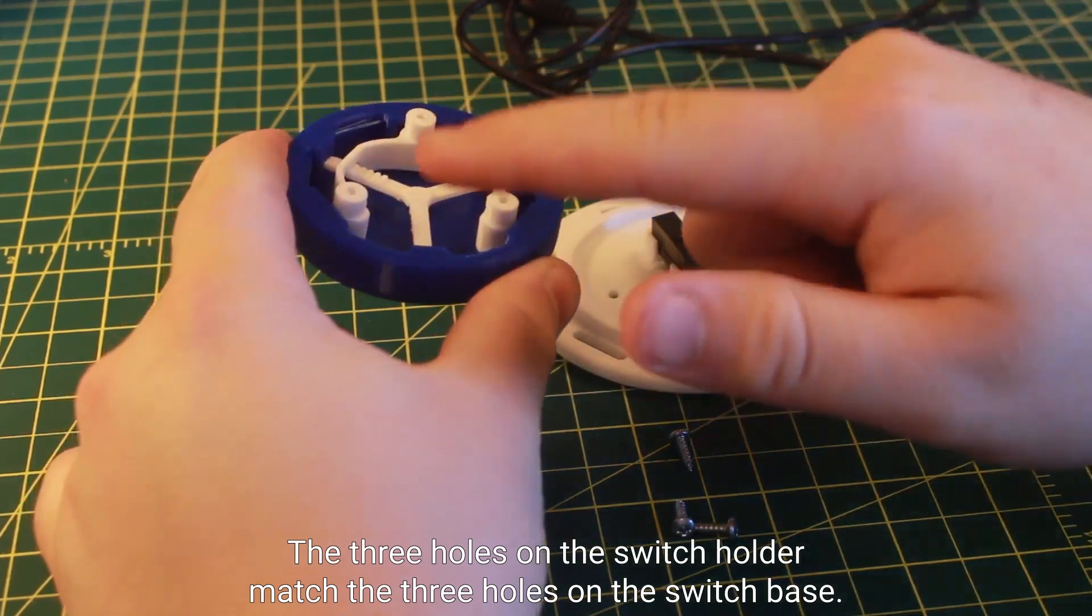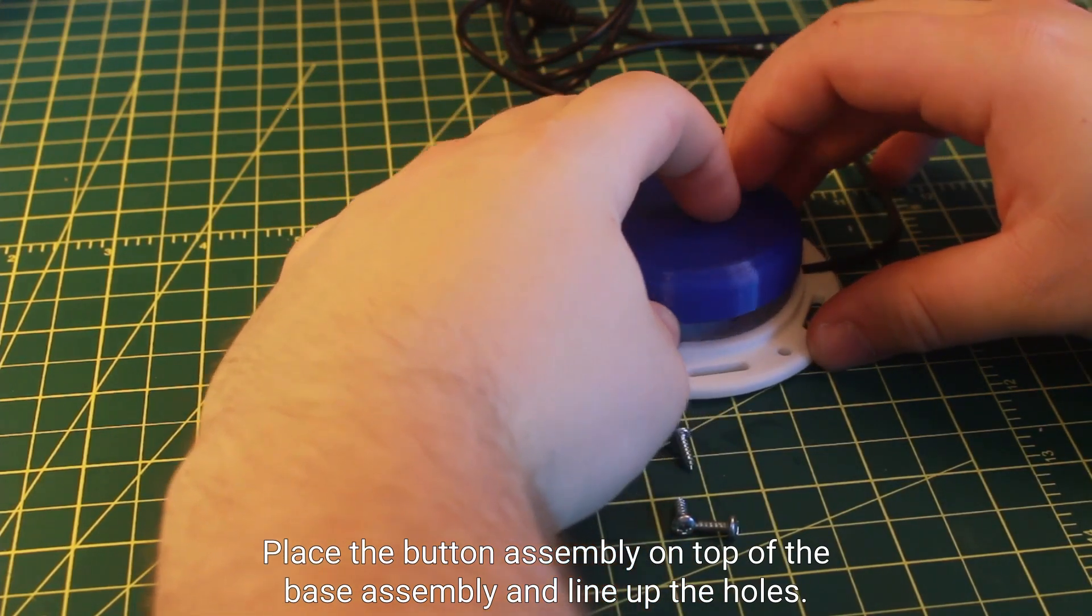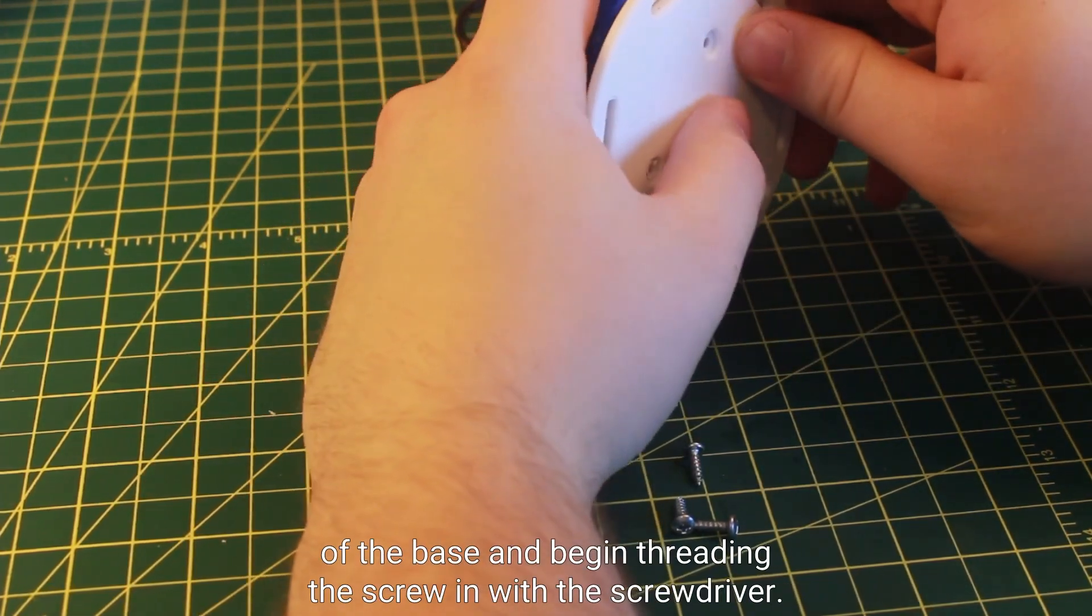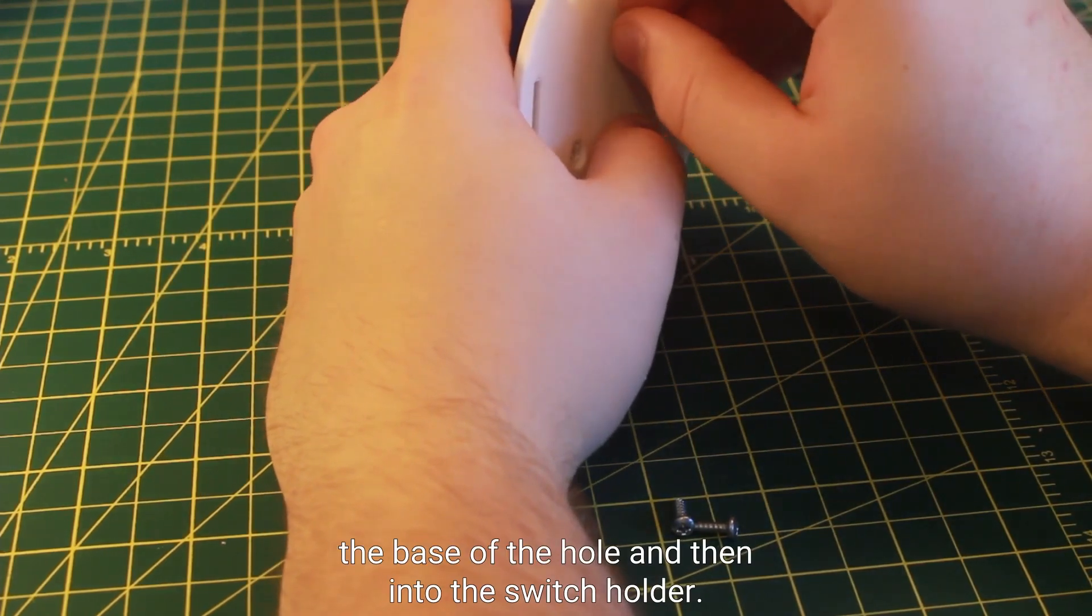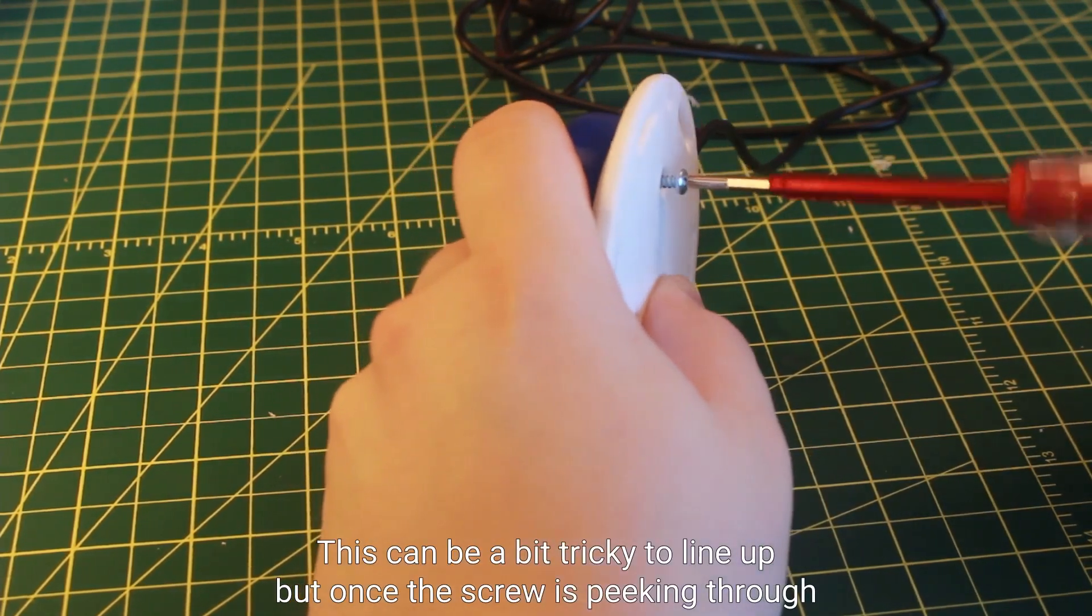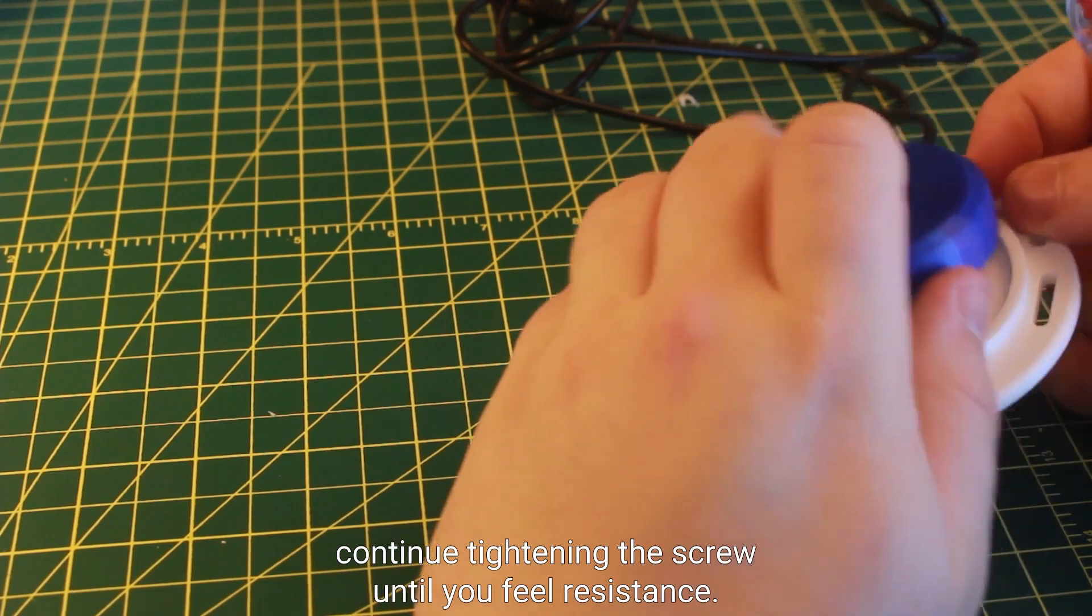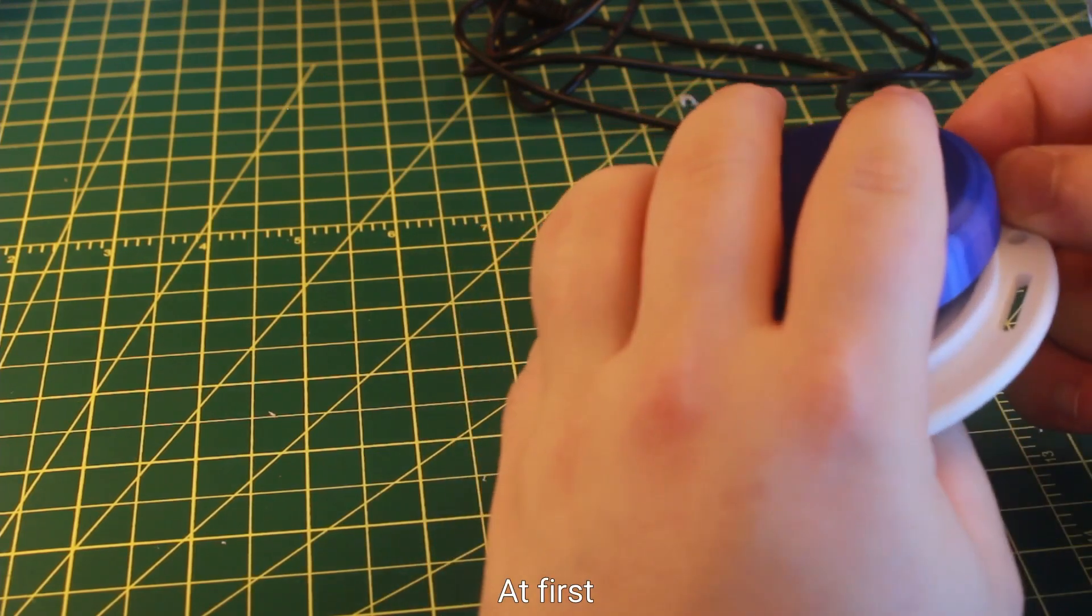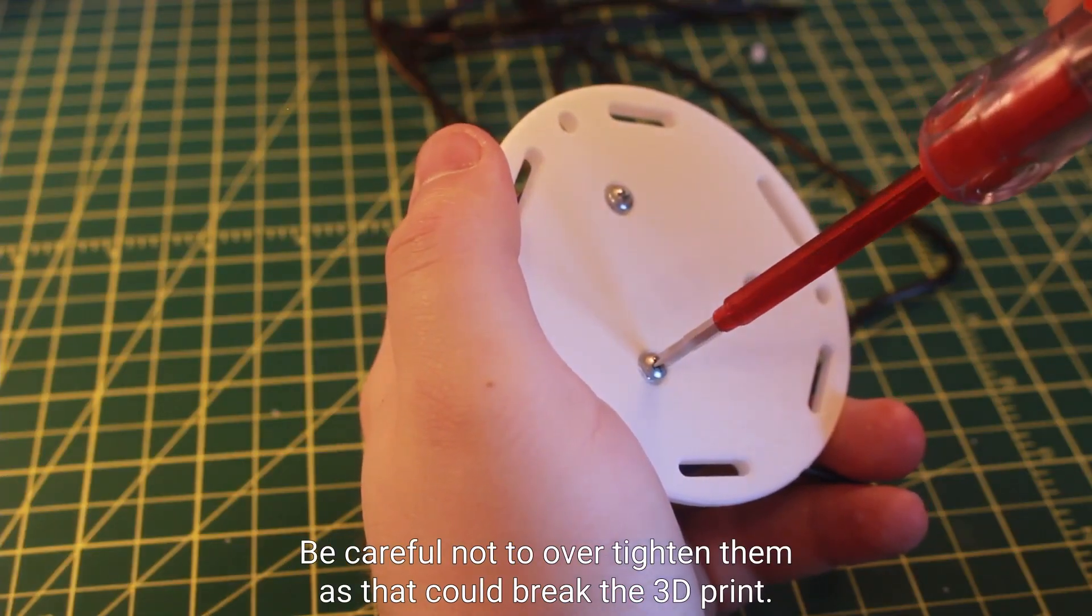The three holes on the switch holder match the three holes on the switch base. Place the button assembly on top of the base assembly and line up the holes. Then take one of the three screws and place it into the hole on the bottom of the base and begin threading the screw in with the screwdriver. We want the screw to go both through the base of the hole and then into the switch holder. This can be a bit tricky to line up, but once the screw is peeking through the base it will be easier to line up the hole on the switch holder and then continue tightening the screw until you feel resistance. Be careful to not over tighten and tighten them all loosely at first. Go back over the screws and tighten them until you feel resistance. Be careful not to over tighten them as that could break the 3D print.